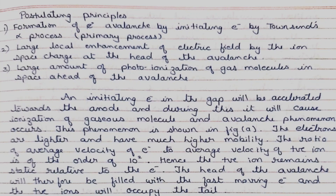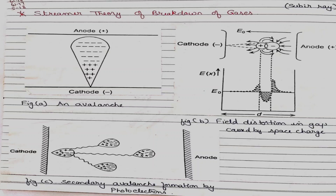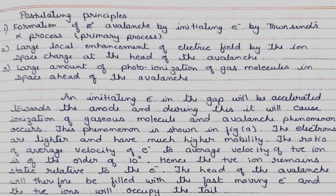An initiating electron in the gap will be accelerated towards the anode, and during this it will cause ionization of gas molecules, and the avalanche phenomenon occurs. When an electron initiates in any gap, it accelerates towards the anode and causes ionization of the gas molecules. The electrons then have much higher mobility.